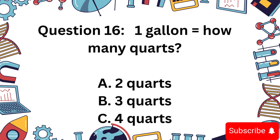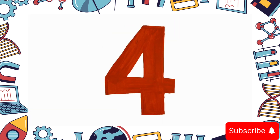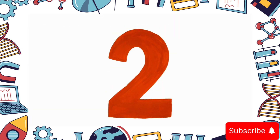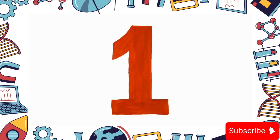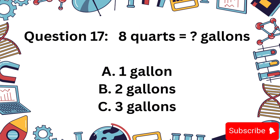Question 16. 1 gallon is how many quarts? A: 2, B: 3, or C: 4? The answer is C: 4 quarts in 1 gallon.